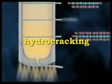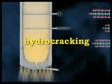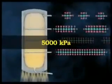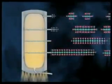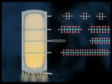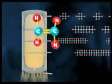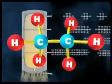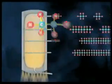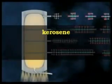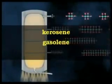In hydrocracking, crude oil is heated at very high pressure, usually around 5000 kilopascals, in the presence of hydrogen, with a metallic catalyst such as platinum, nickel or palladium. This process tends to produce saturated hydrocarbons such as shorter carbon chain alkanes, because it adds a hydrogen atom to alkenes and aromatic hydrocarbons. It is a major source of kerosene jet fuel, gasoline components and LPG.